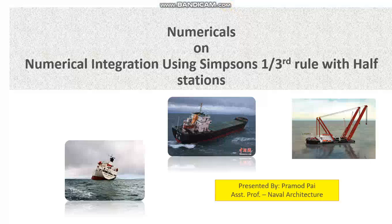We know that when we cannot use normal mathematical formulas or other methods to find the area or volume of a given shape — for example, when we need to find how much paint has to be applied on a ship's hull — the shape of a ship's hull does not resemble any plane figure like a rectangle, circle, or parabola, or any 3D object like a cube or cylinder. As you can see in these three photographs, a ship's shape does not match any 2D or 3D figures studied in mathematics.